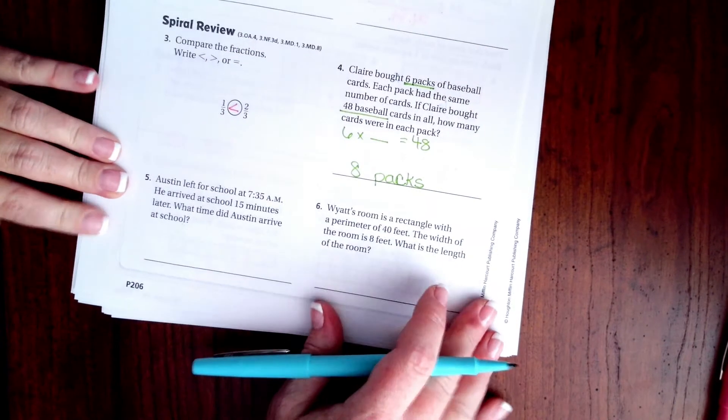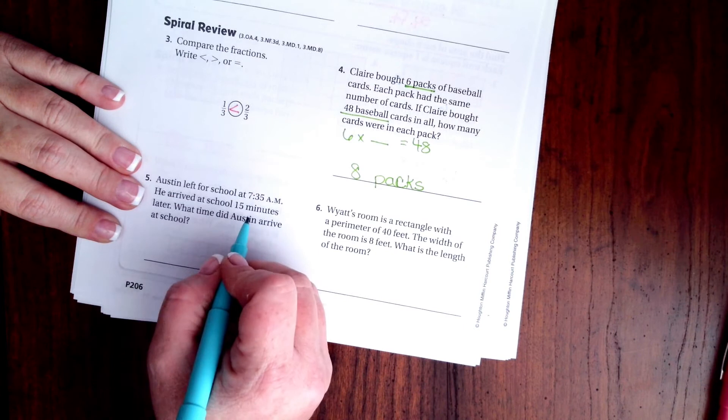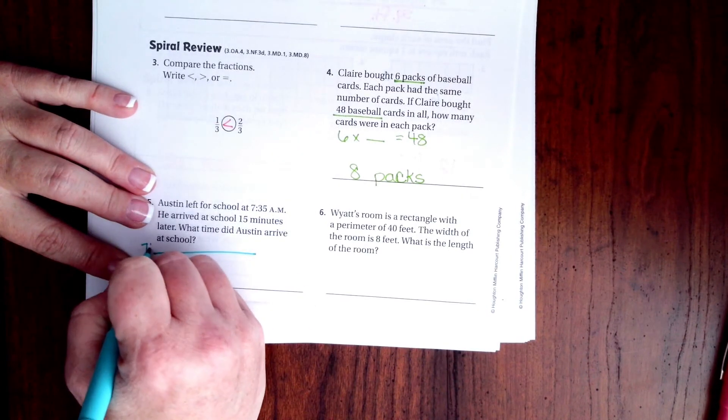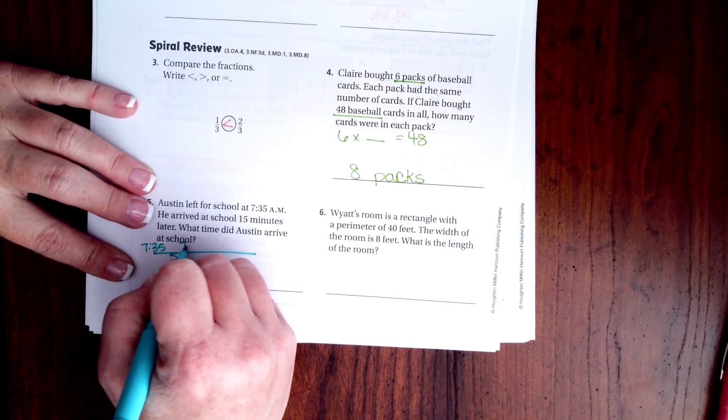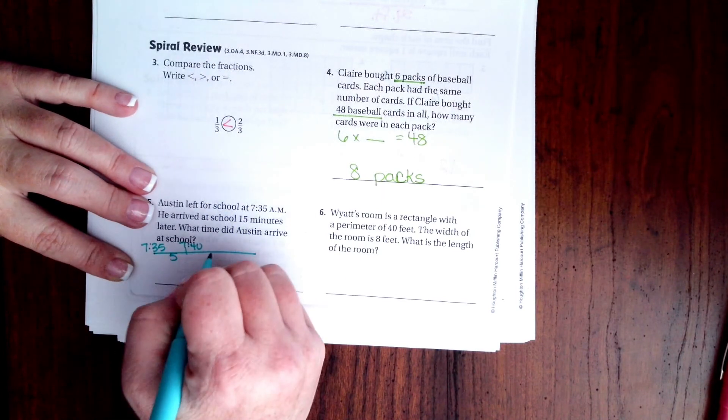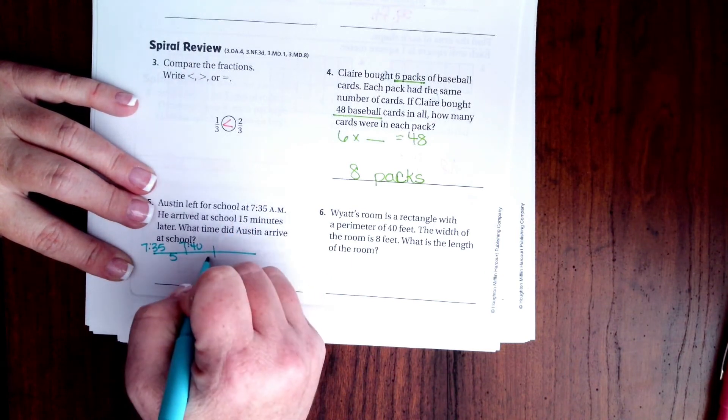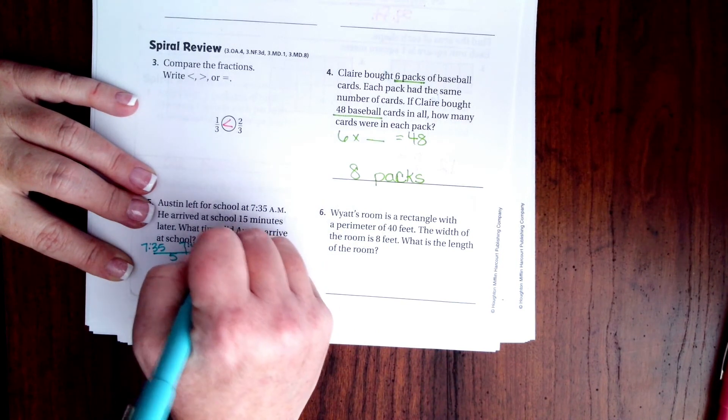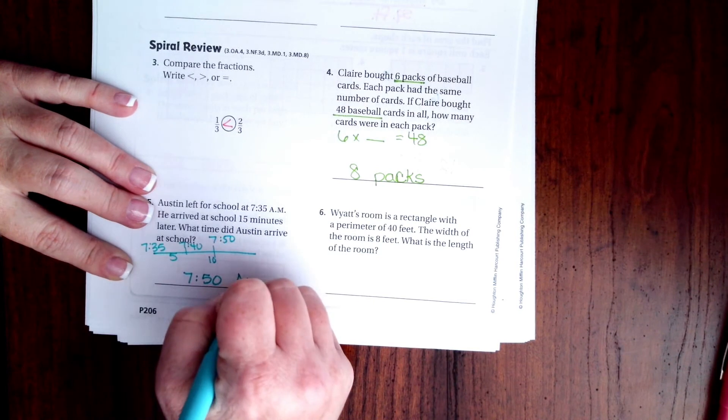Austin left for school at 7:35 AM. He arrived at school 15 minutes later. 7:35, I'm gonna bump for five minutes to 7:40, then I'm gonna do the other 10 minutes because five plus 10 is 15. So 7:50 AM.